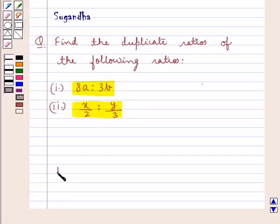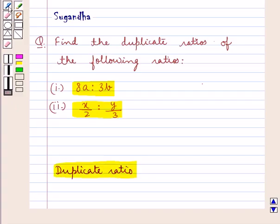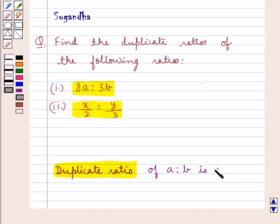First of all, we see what is the duplicate ratio. Note, the duplicate ratio of the ratio a is to b is a square is to b square. That is, when a is to b is compounded with itself, we get the resulting ratio which is a square is to b square and this is the duplicate ratio. This is the key idea that we use in this question.